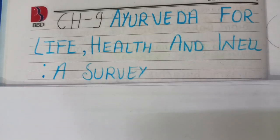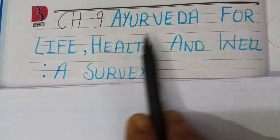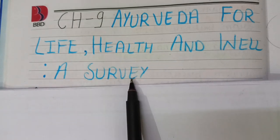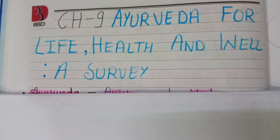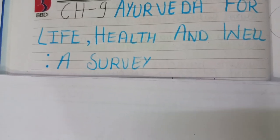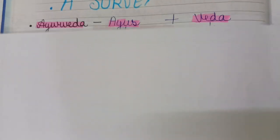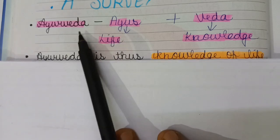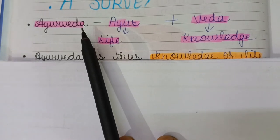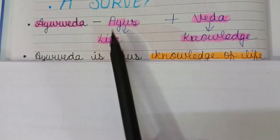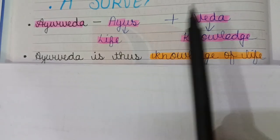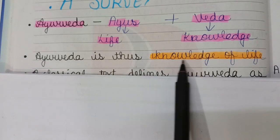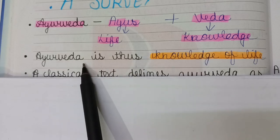Hello friends. In this video we discuss chapter number 9, Ayurveda for life, health and well-being, a survey for your VVM exam and Indian contribution to science book. First we know about Ayurveda. Ayurveda is made from two words: Ayus plus Veda. Ayus or Ayur means life, and Veda means knowledge. It means Ayurveda is knowledge of life.